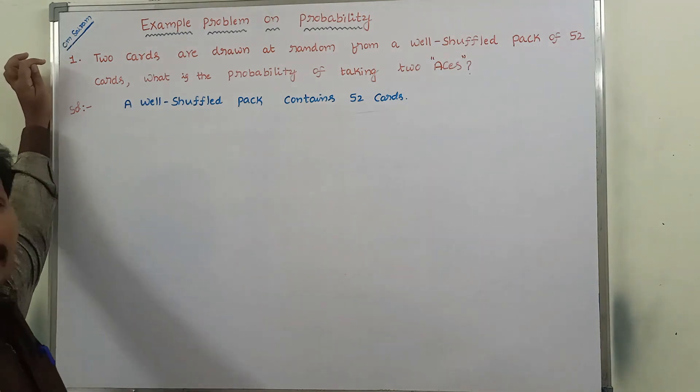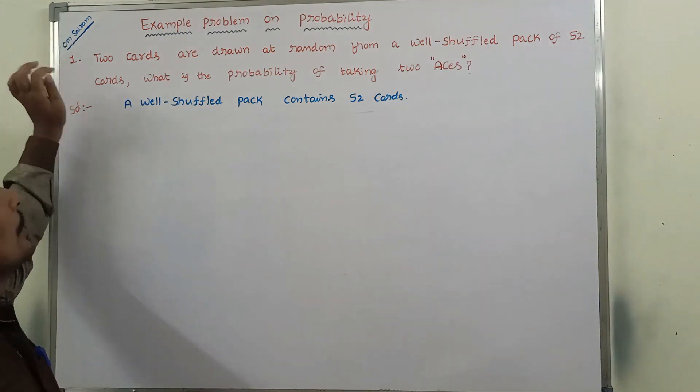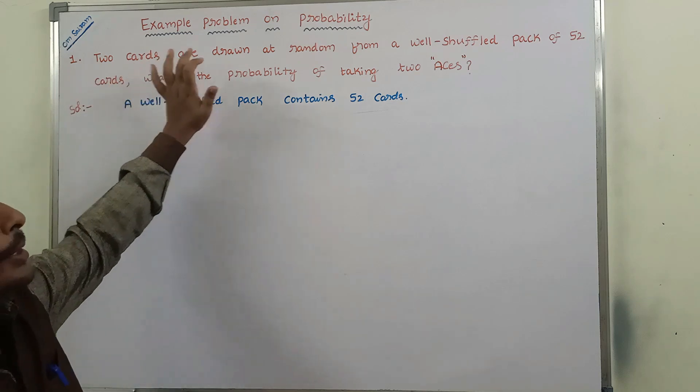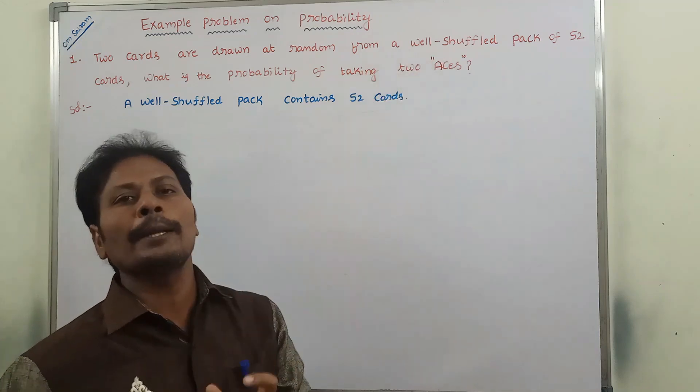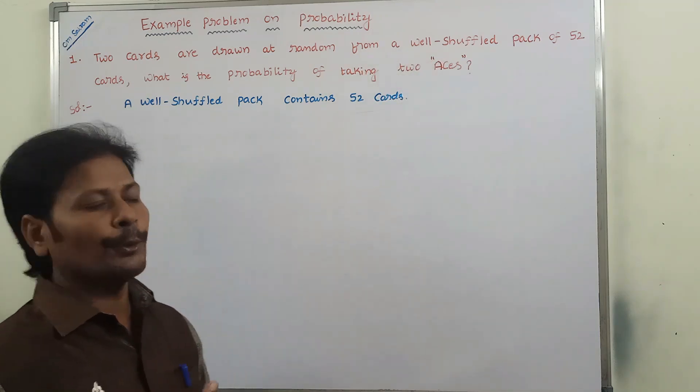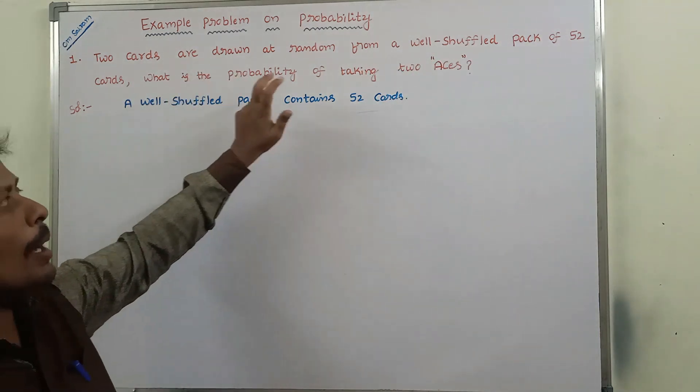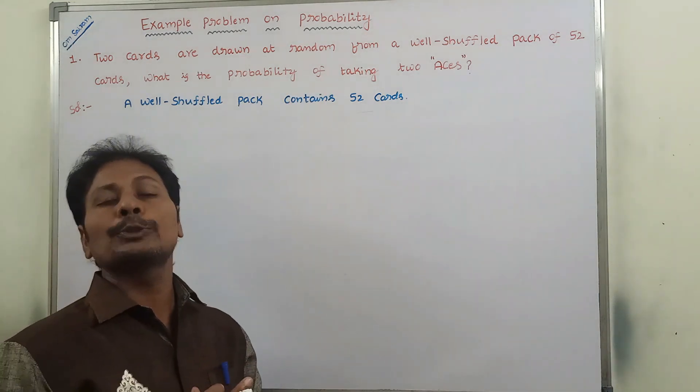The given example problem is: two cards are drawn at random from a well-shuffled pack of 52 cards. What is the probability of taking two aces?